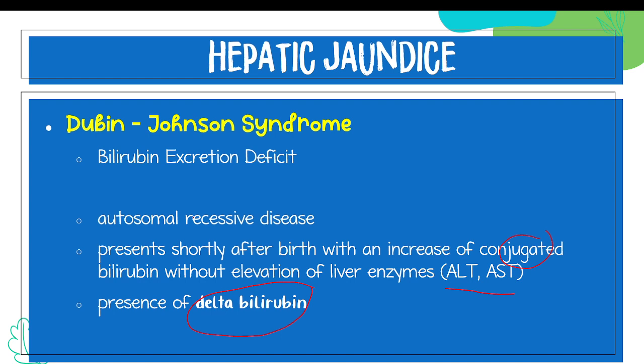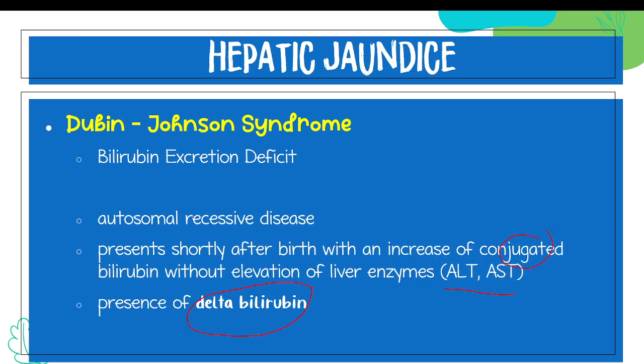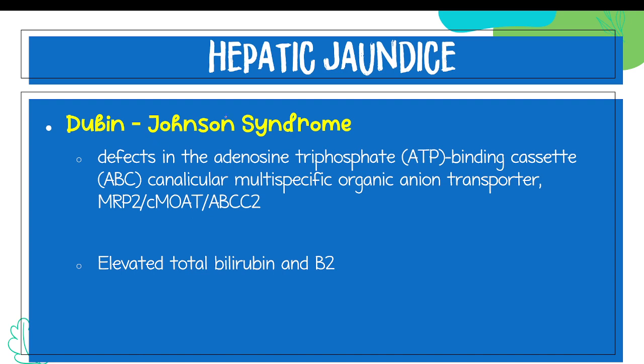Delta bilirubin means bilirubin that is bound to albumin. Remember that albumin is the main transport protein of bilirubin 1, responsible for transporting bilirubin 1 to the hepatocyte. Delta bilirubin is non-toxic and has no clinical consequences. In Dubin-Johnson, the bilirubin excretion deficit is caused by a defect in the adenosine triphosphate binding cassette — specifically the Canalicular Multi-Specific Organic and Ion Transporter, also known as MRP-2 (Multidrug Resistance Associated Protein-2), CMOAT, or ABCC-2.